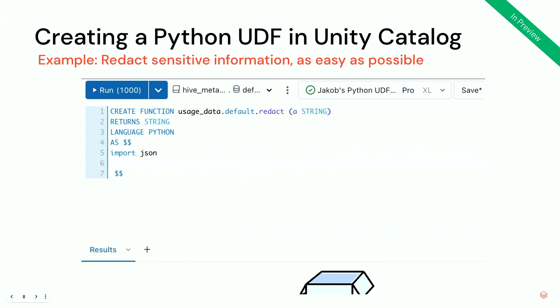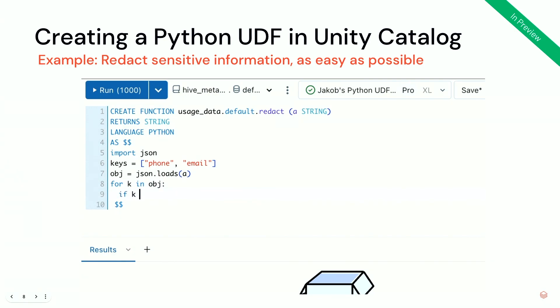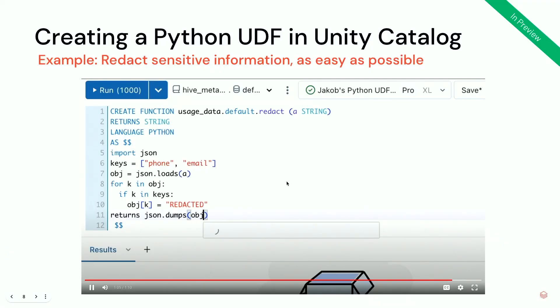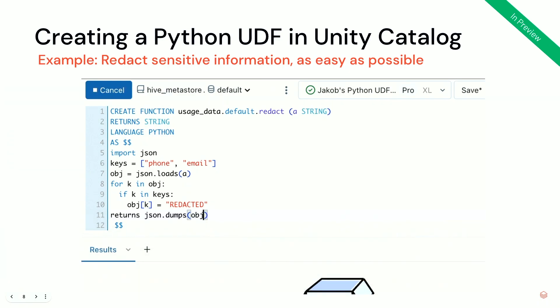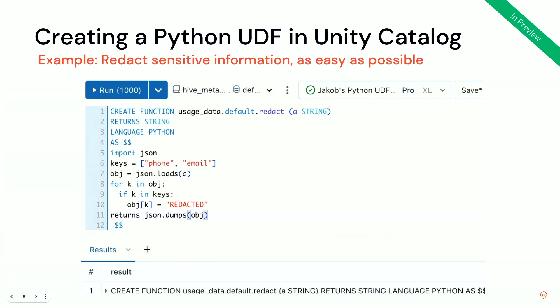For this example, we import the JSON package because we're doing some JSON modifications, and then we specify the redaction logic: if there is a key called phone or email in this JSON blob that I parse, I go through that JSON blob, look for those keys, and if the key exists, I replace it with a new string called 'redacted'. Because this is a UDF, this returns a string. You execute that statement, and from there on this function is available in Unity Catalog for your workload.